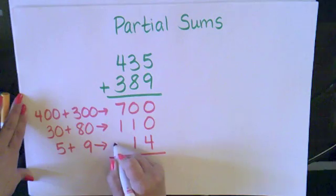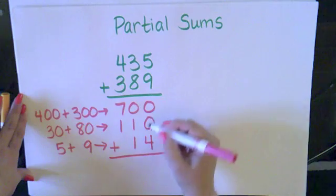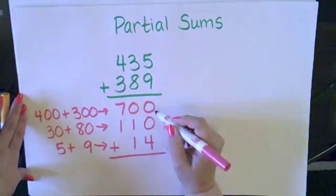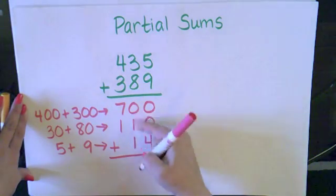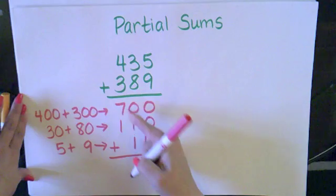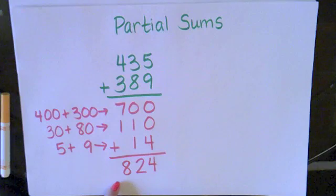Now I need to add up my parts and then that will give me my final total or my sum. So I have four ones, I have two tens, and I have eight hundreds. So my total sum is eight hundred twenty-four.